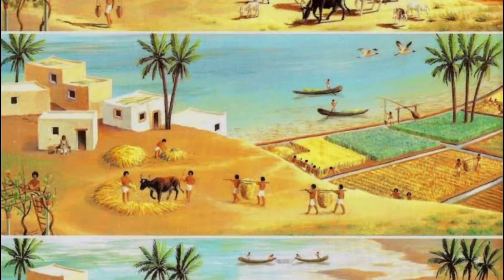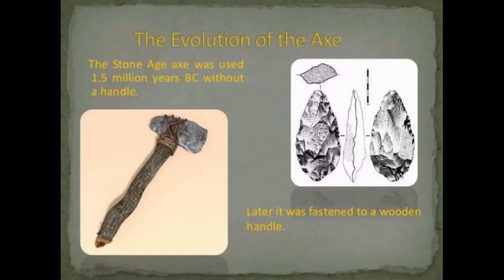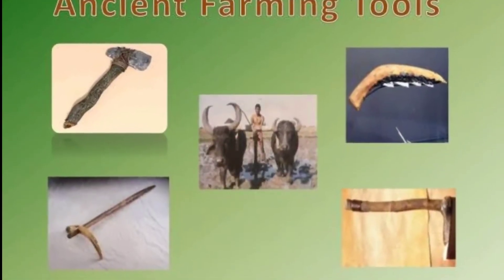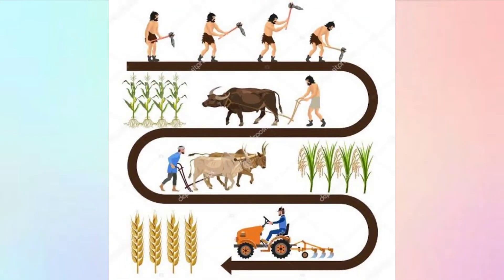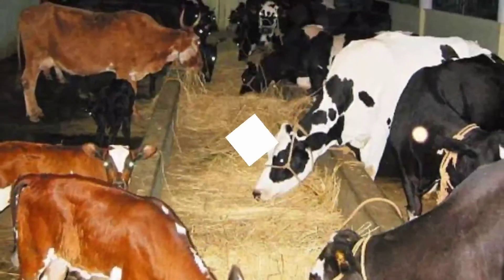In ancient times, man roamed from one place to another and lived on whatever was available in the form of raw fruits, vegetables, and by hunting animals. With time, he started growing crops and domesticated animals. Gradually he developed tools and tried different practices for better crop production, which led to the evolution of agriculture and different agricultural practices.